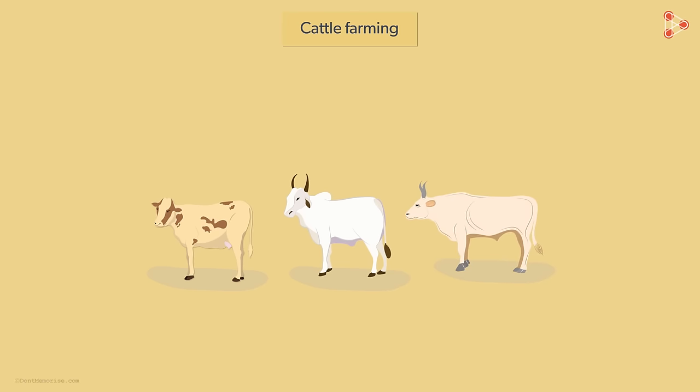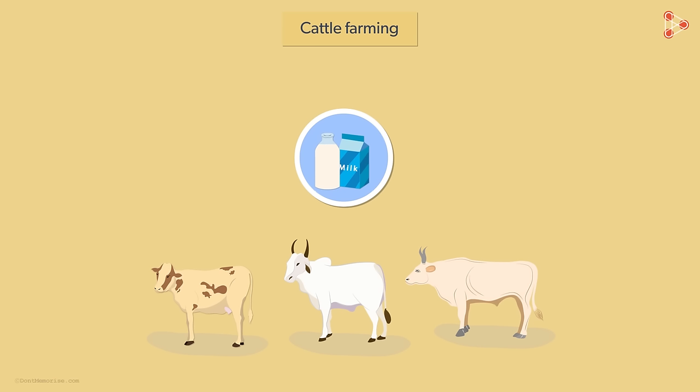Cattle are dual-purposed. The main thing we get from cattle is milk. Cattle farming comprises milched animals — animals that provide us with milk. Milk is the crux of the dairy industry.